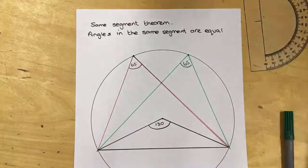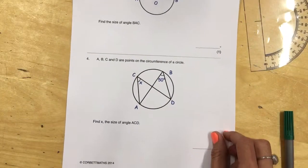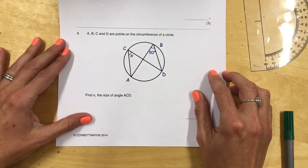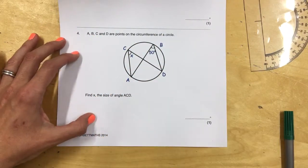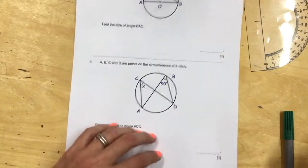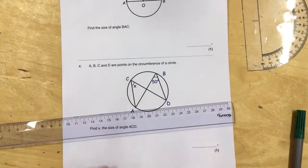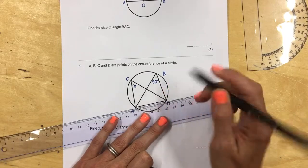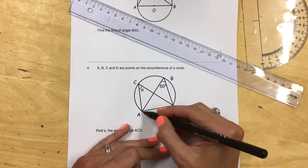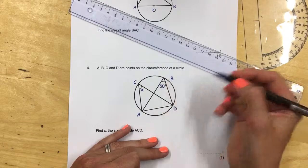Now, if we apply that to a question. This is just a very simple question. A, B, C and D are points on the circumference of a circle. This is the cord that we were talking about in the previous section. This is your segment here. These are coming out from the same segment.